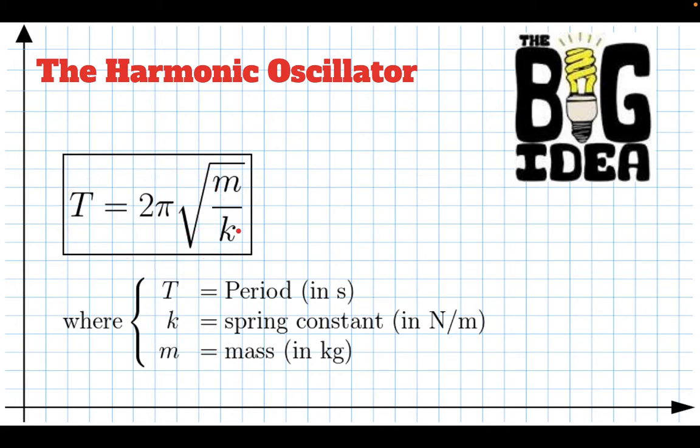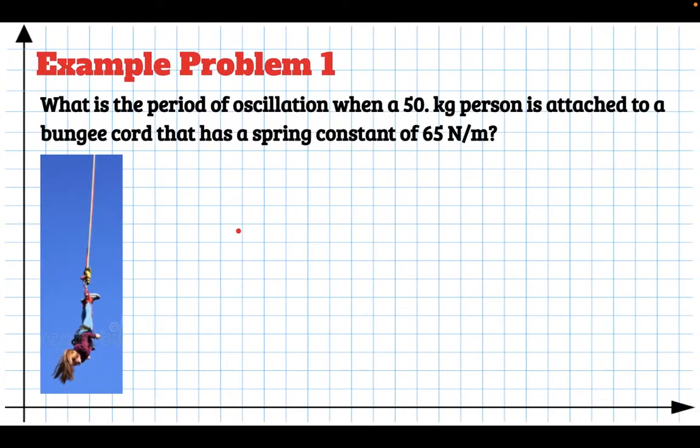So let me show you two example problems solving problems with this. A bungee cord is an example of a restoring force. If we were to just hang you from a bungee cord, you would reach equilibrium. If we then pulled you down, you would bounce down and up and down and up. So I have a bungee cord example here. We have a 50-kilogram person, and the spring constant of the bungee cord is 65 newtons per meter. That means a force of 65 newtons will stretch the bungee cord one meter. So we want to know what is the period of oscillation of a person who jumps off of a bridge attached to a bungee cord. The mass is 50 kilograms. The spring constant is 65 newtons per meter. And we're trying to find the period.